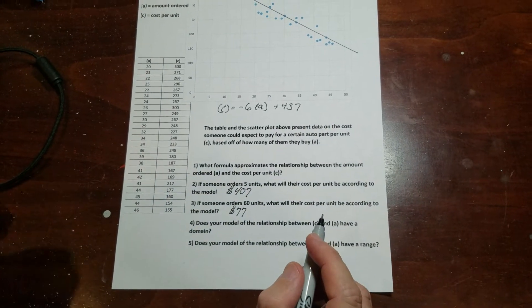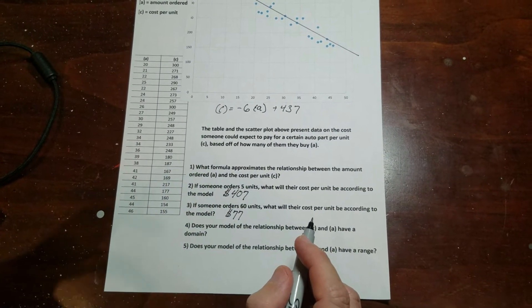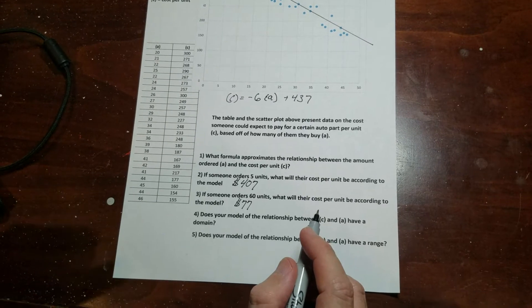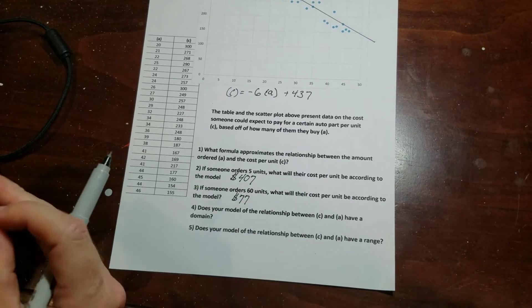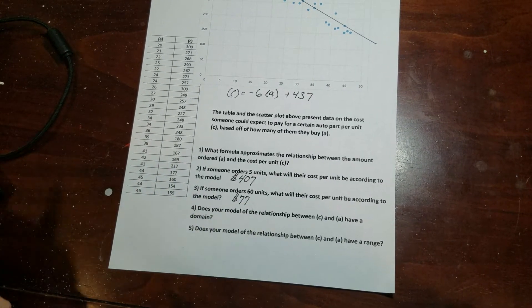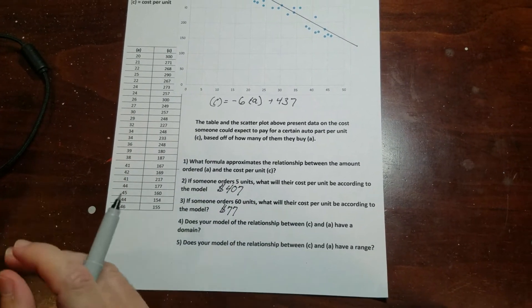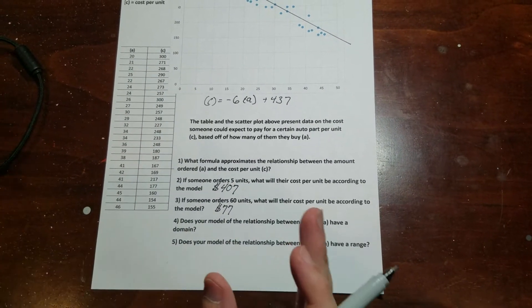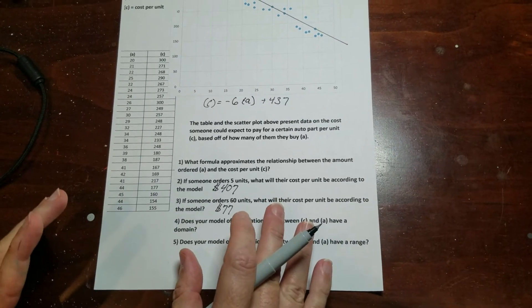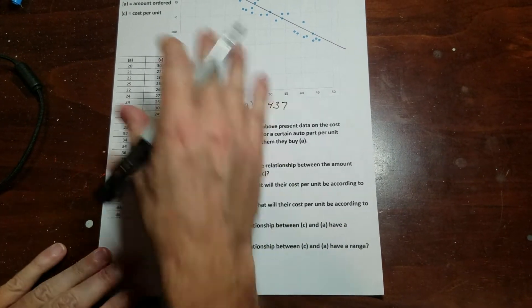But what happens to these models is they're just models to try to describe what's going on, and the models only work so far. That's where domain and range - that's what they tell us - this rule will work as long as things are between this and this. And you get a pretty good idea of what that is usually from the data.